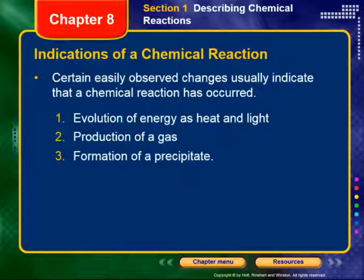As a human being on the macro scale, we cannot see with our naked eyes these reactions taking place. We can, however, see the results of those reactions. They come in three basic forms. The first is the evolution of energy as heat and light. Some books will list color change as a fourth indicator, but our book lumps color change in with number one, since we're talking about changes in light.